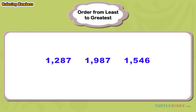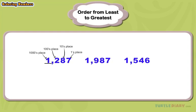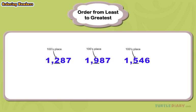By looking at all three numbers, we can tell that they are in the thousands place as they have four digits. All the digits in the thousands place are a one, so we move to the right or next place value. The next place value is the hundreds place. We notice that the digits in the hundreds place are all different.